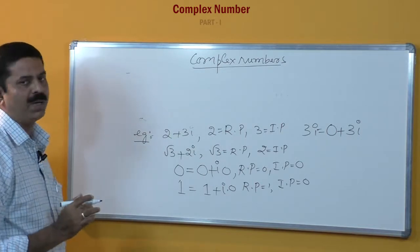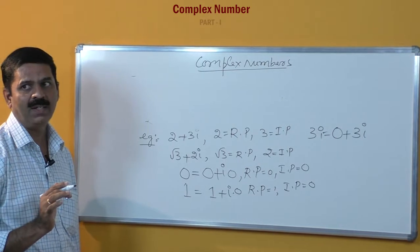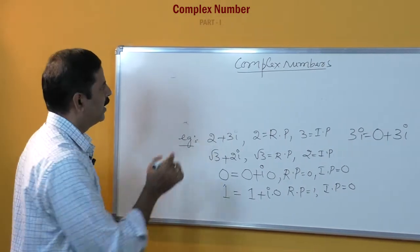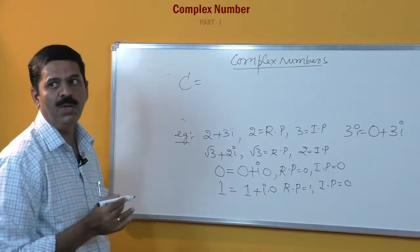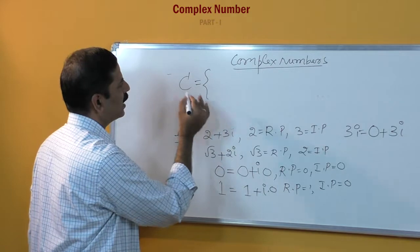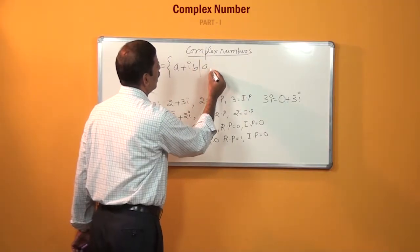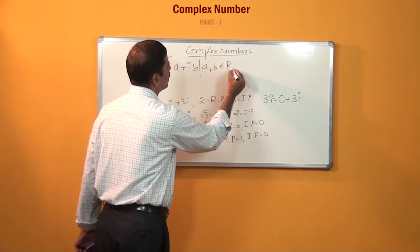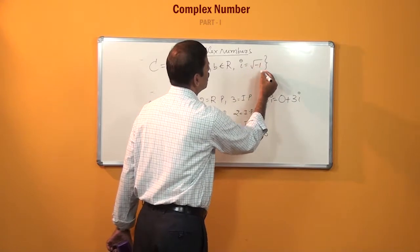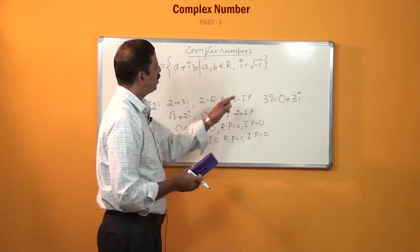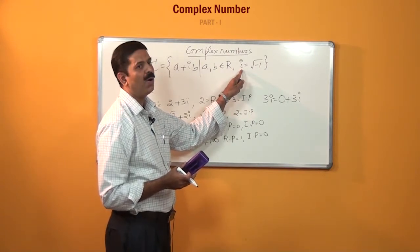As every number has a notation and a set, we express complex numbers in terms of a set. The set of complex numbers is represented as C, defined as a plus ib where a and b belong to the set of real numbers and i is equal to root minus 1. This notation i was first given by Euler.